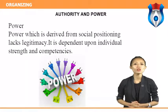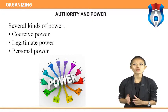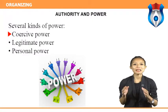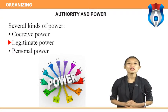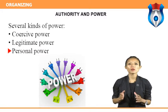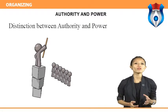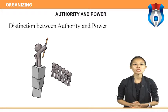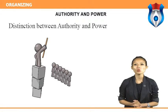Power, which is derived from social positioning, lacks legitimacy and is dependent upon individual strength and competencies. Types of power include: coercive power — the extent to which a manager can deny desired rewards or administer punishment to control other people; legitimate power — if legitimacy is lost, authority will not be accepted by subordinates; and personal power — derived from individual sources. The distinction between authority and power: authority is legally enforced and derived from level of positioning in an organization, while power is individual, independent, and originates from charisma and social positioning. Authority is formal, based upon superior-subordinate relationships; power is informal, based upon individual understanding.